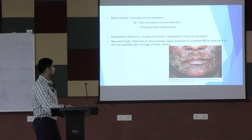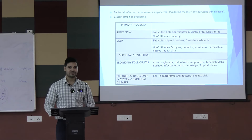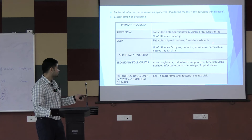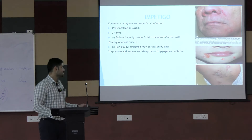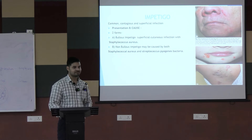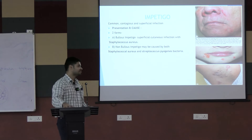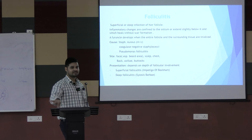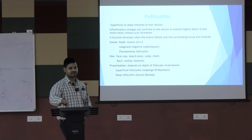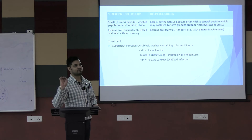Reviewing the classification table now makes more sense after learning each condition. The causative organism is Staph aureus for most conditions except pitted keratolysis (Kytococcus sedentarius), erythrasma (Corynebacterium), SSSS, and TSS. Treatment follows a similar general approach: hygiene measures, antiseptic washes, topical antibiotics, and systemic antibiotics as needed. For conditions with excessive sweating, aluminum chloride or botulinum toxin is used.